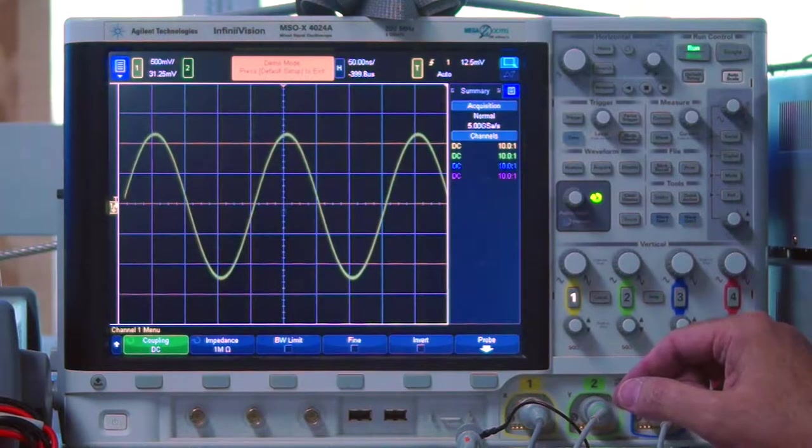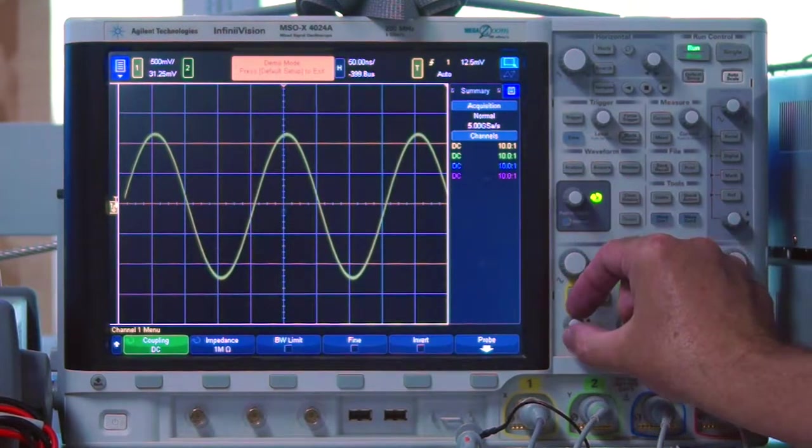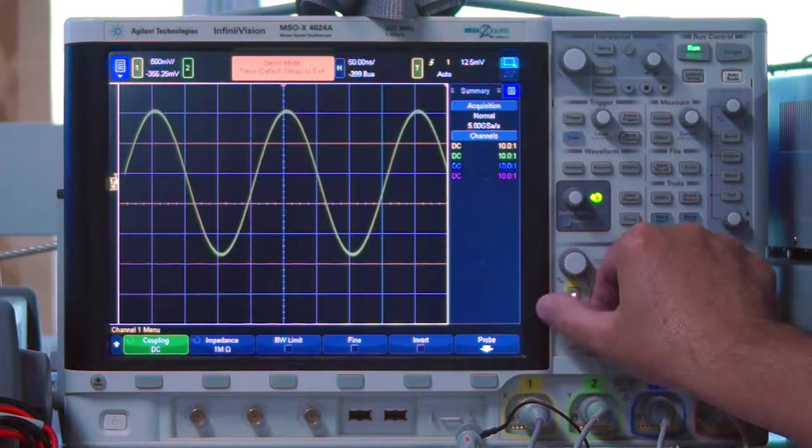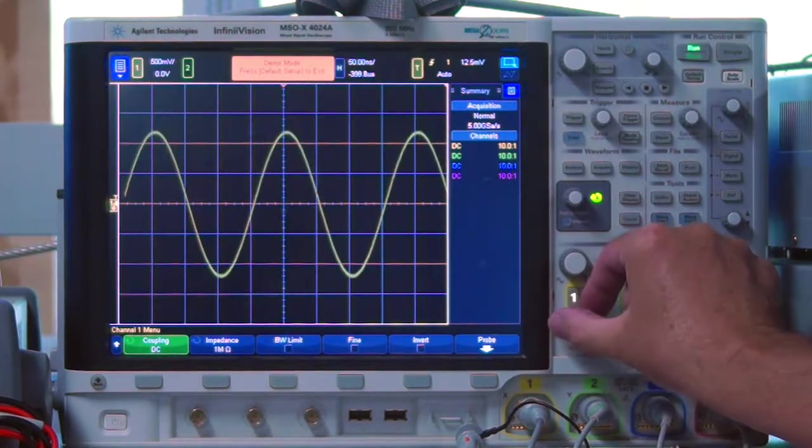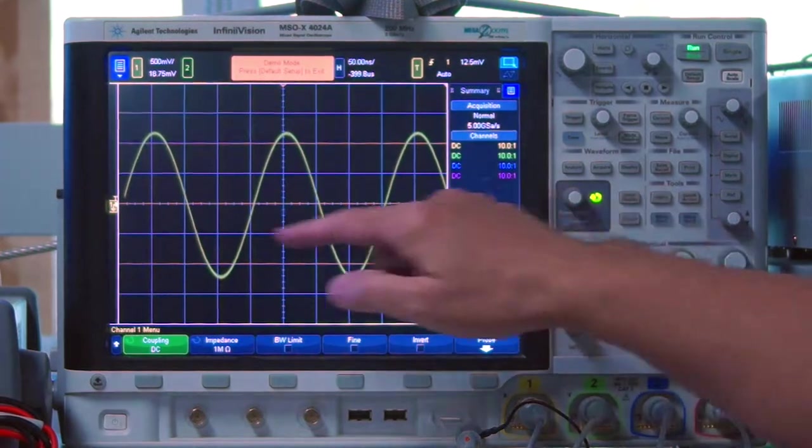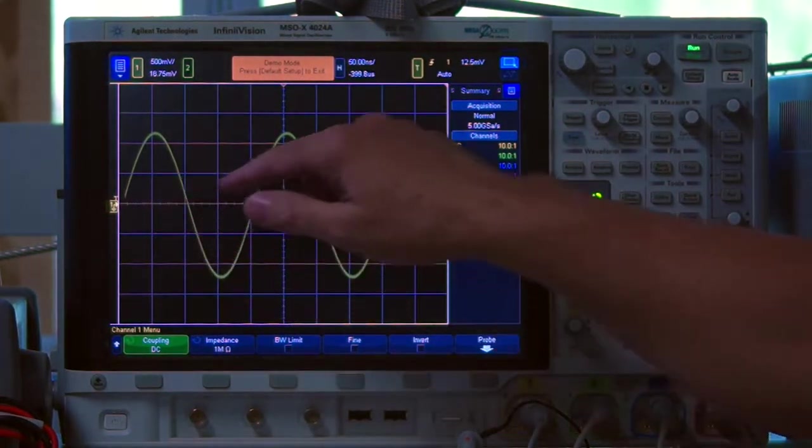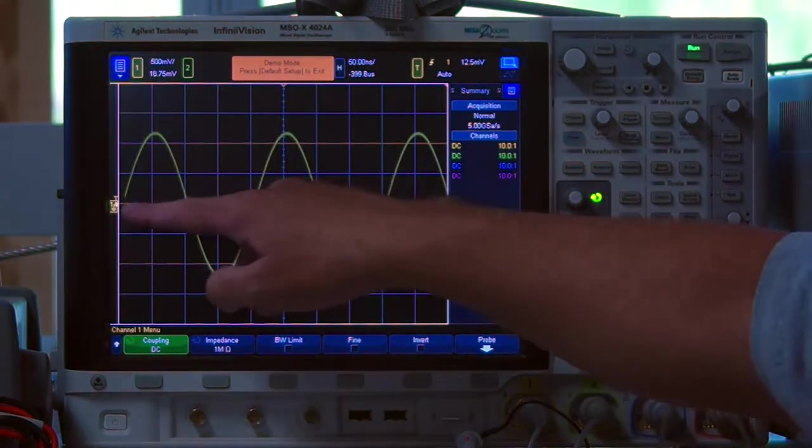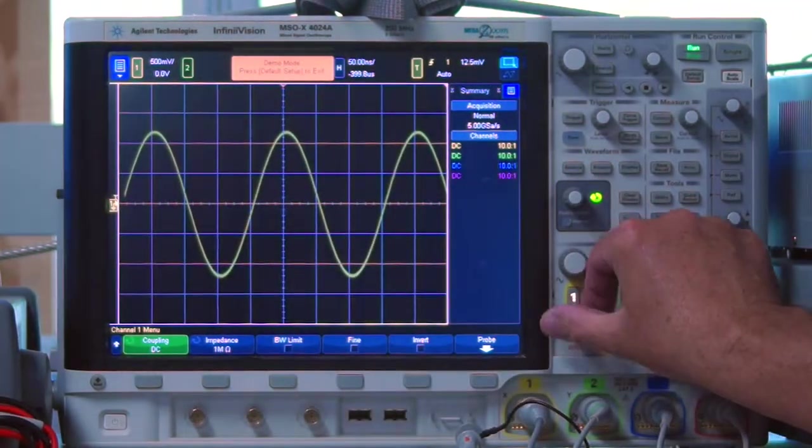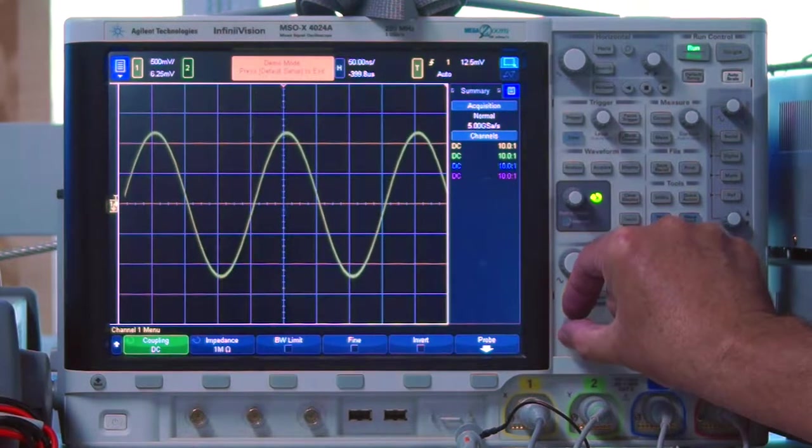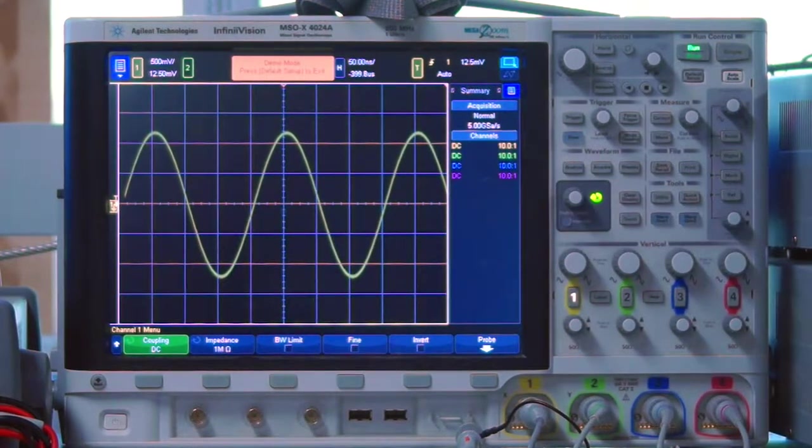First two knobs I want to talk about are, the first one is the position. So I can move the signal up and down on the screen. And you notice that tracking along with the signal, if you're not able to see this in the video, there's a little ground reference there telling us that ground is right at that point, and I can move that up and down the screen. We'll explain a little later why we might want to do that.